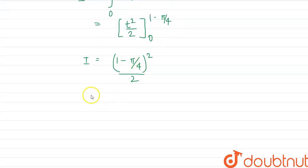So this can be further simplified. I is equal to (4 - π)² / (4 × 4 × 2) which is 32. So the value of our integral is (4 - π)²/32. So this is our required answer. Thank you.